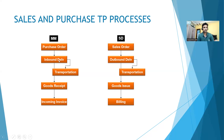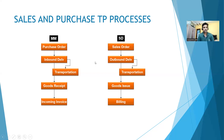After goods issue, billing is done. On the purchase side, if you want to buy raw material from a vendor for your plant, you raise a purchase order. The vendor creates an inbound delivery, transportation activities take place, and then goods receipt and the incoming invoice are processed.